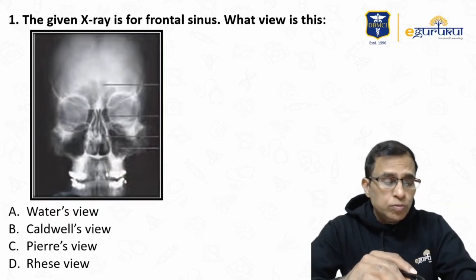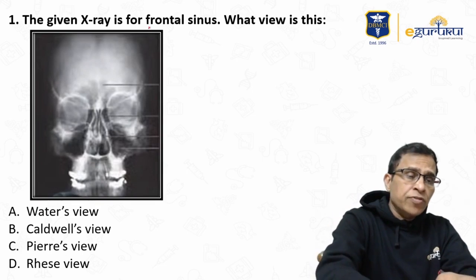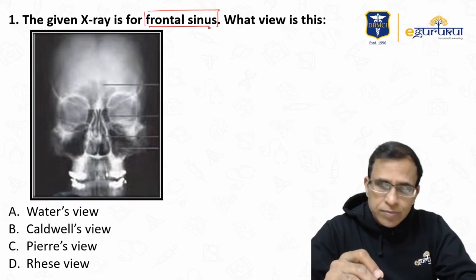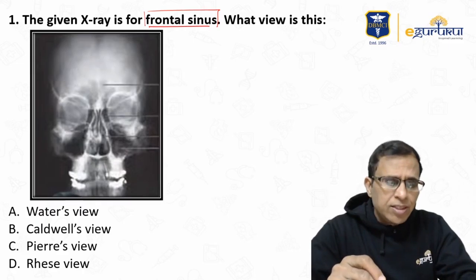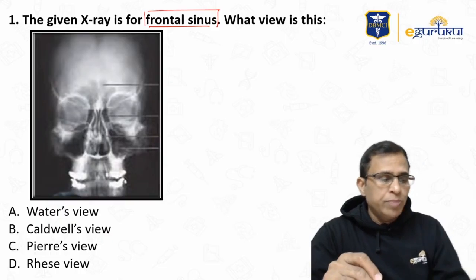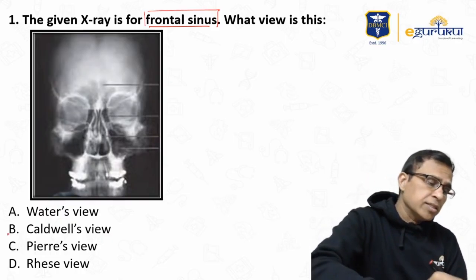There were two clues in this question. First, it's an x-ray for the frontal sinus — if you know which is the best x-ray view for the frontal sinus, you know the answer. Second, the x-ray itself was shown. The four choices were: Water's view, Caldwell's view, Peer-raise view, and Racer view. The correct answer is Water's view.